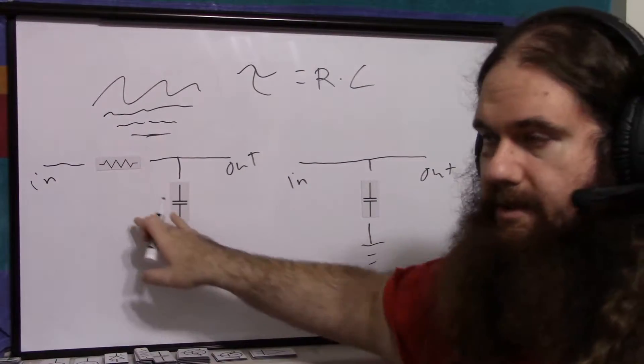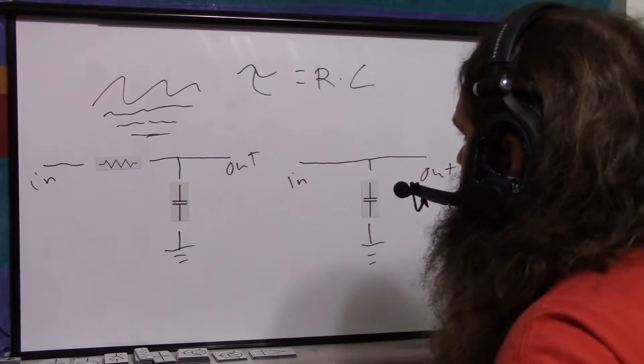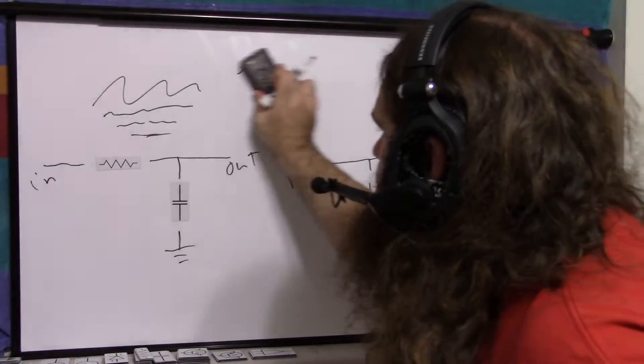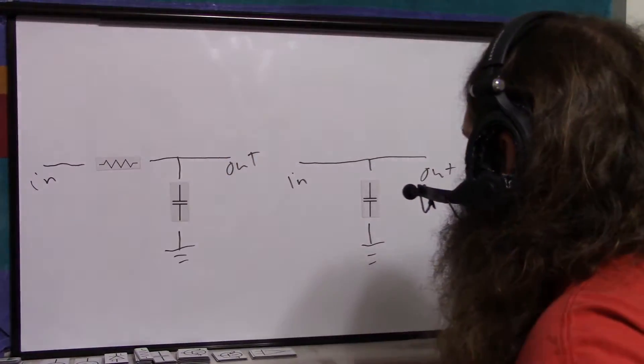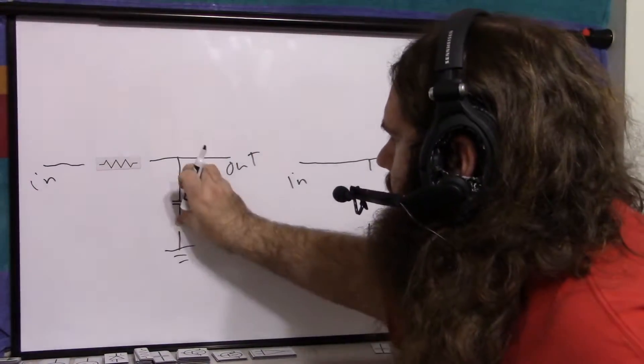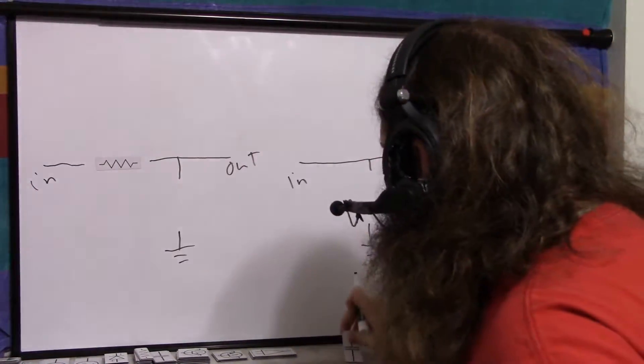In other words, a decoupling capacitor and a low-pass filter are the same thing, just with different amounts of filtering. More filtering equals more amplitude loss and a smoother signal.